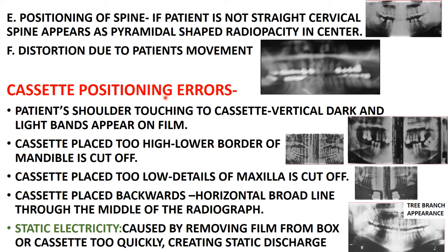Cassette positioning errors: if the patient's shoulder is touching the cassette, vertical dark and light bands appear on the film. If the cassette is placed too high, the lower border of the mandible is cut off; if too low, the details of the maxilla are cut off. If the cassette is placed backward, a horizontal broad line appears through the middle of the radiograph.